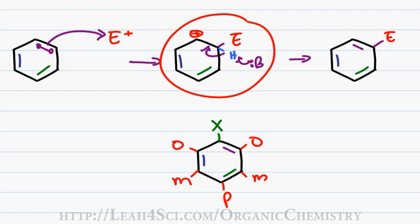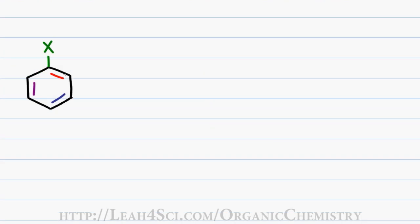In future videos, I'll go through why certain substituents direct ortho, meta or para but right now, I just want to show you the resonance intermediates for each of these structures. I want you to keep in mind here, X does not represent a halogen, it is simply some atom or functional group sitting on benzene.